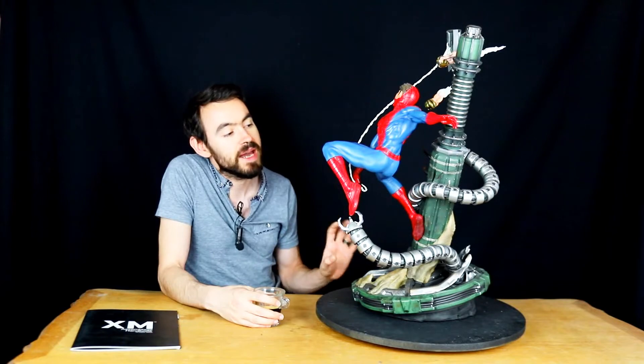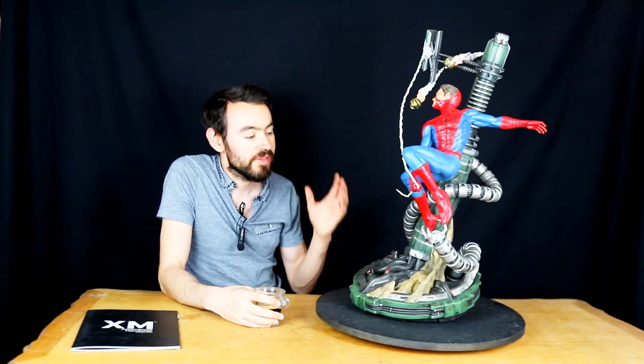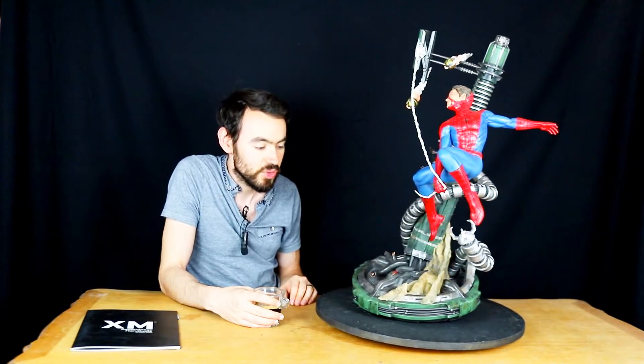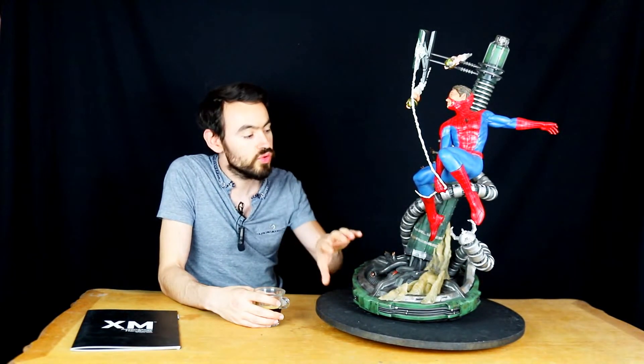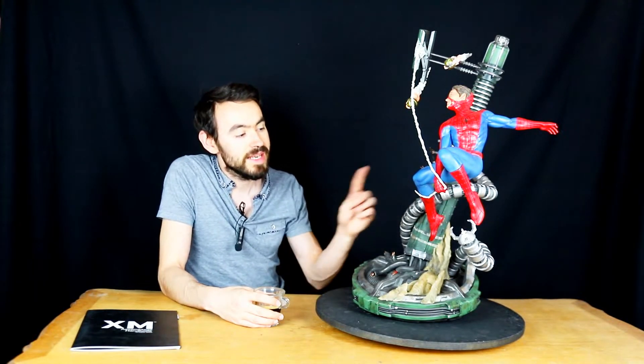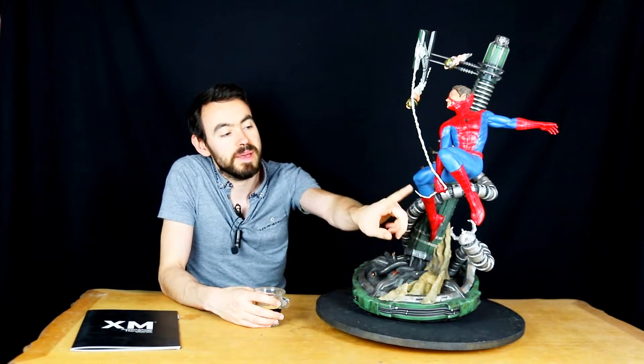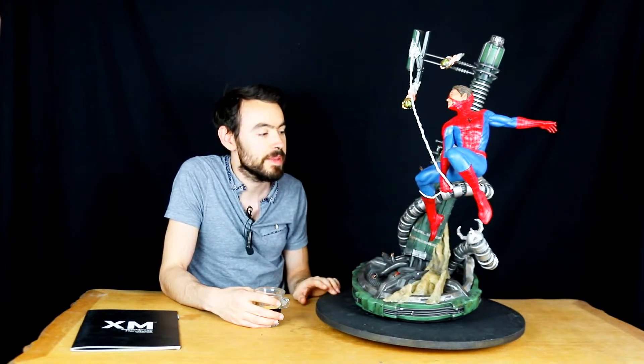Ils sont en résine mais franchement ils ont un rendu qui est vraiment très métallique pour le coup, vraiment très réussi, avec ce pilier un peu broyé, déstructuré donc avec quelque chose qui n'est pas parfaitement rectiligne, ça c'est vraiment très chouette. On a du coup le sable de Sandman qui vient un petit peu s'entortiller sur la base du socle.